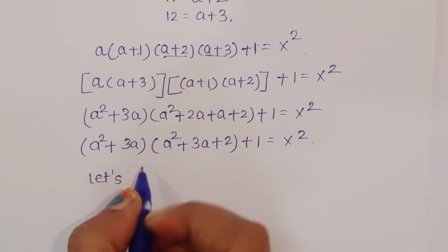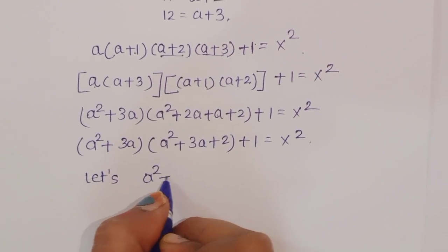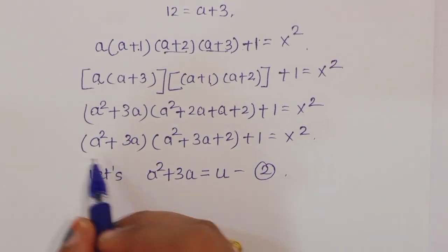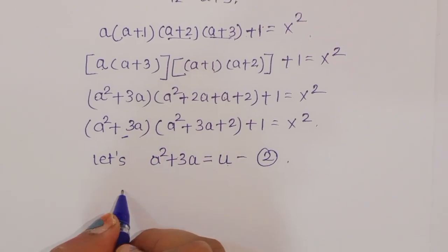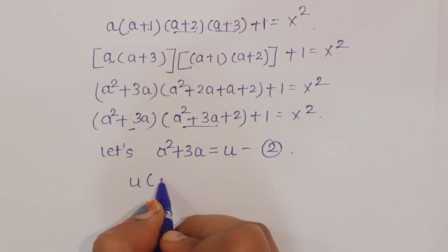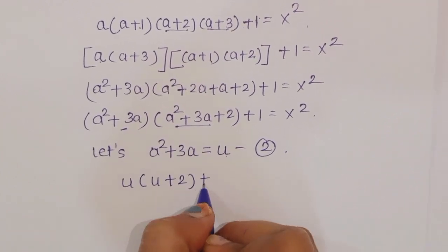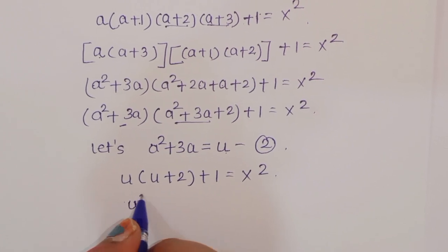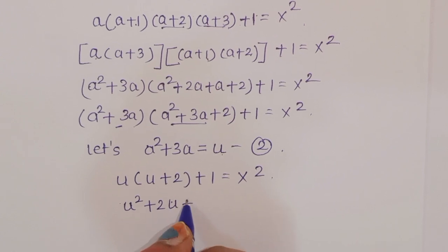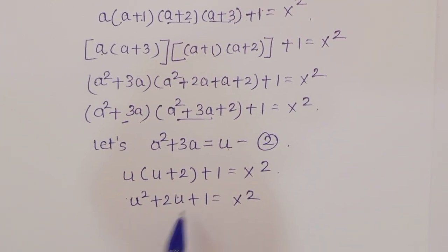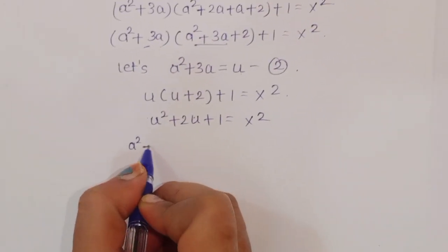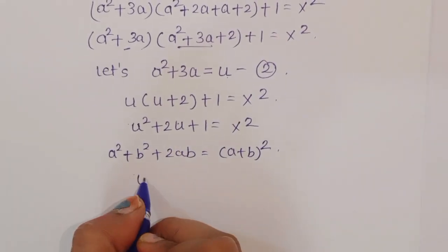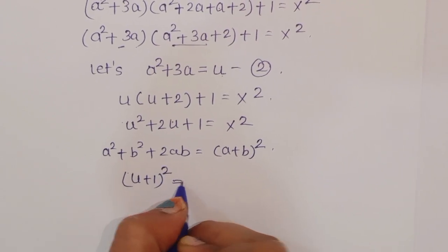Now let u equal a squared plus 3a. This substitution gives us u times (u plus 2) plus 1, which equals u squared plus 2u plus 1, equal to x squared. This matches the formula (a plus b) squared, so we write (u plus 1) whole squared is equal to x squared.